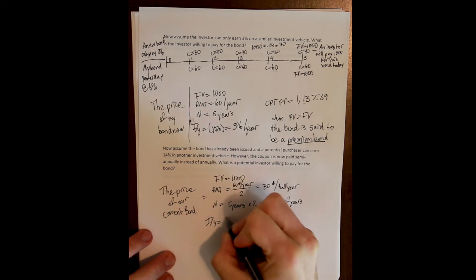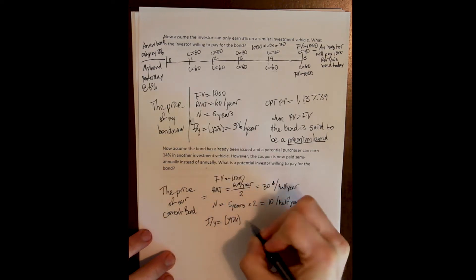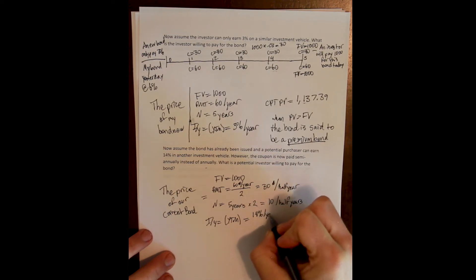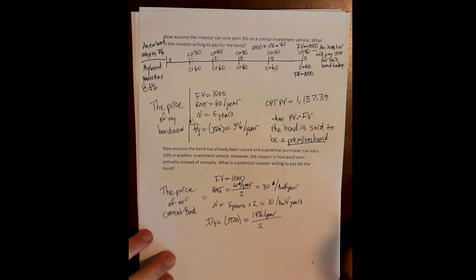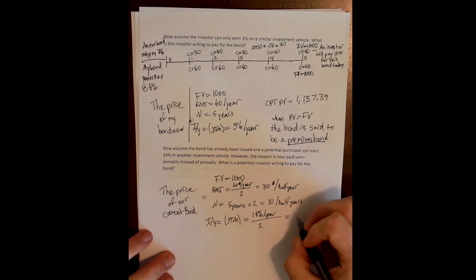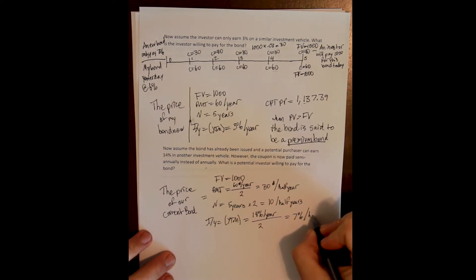My I/Y is always my yield to maturity, and that is the current market rate. And the current market rate has gone up to 14% per year. Again though, I need to convert everything down to the appropriate compounding frequency. So I divide that by two to get 7% over a half year.